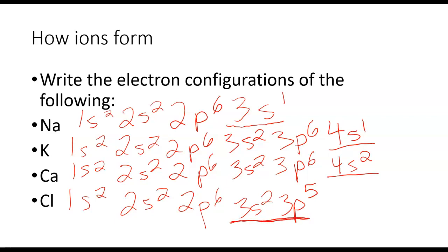So these ones are in group 1a. This is a 2a, and this is 7a. This makes sense. We've got one valence electron, one valence electron, two valence electrons, seven valence electrons.